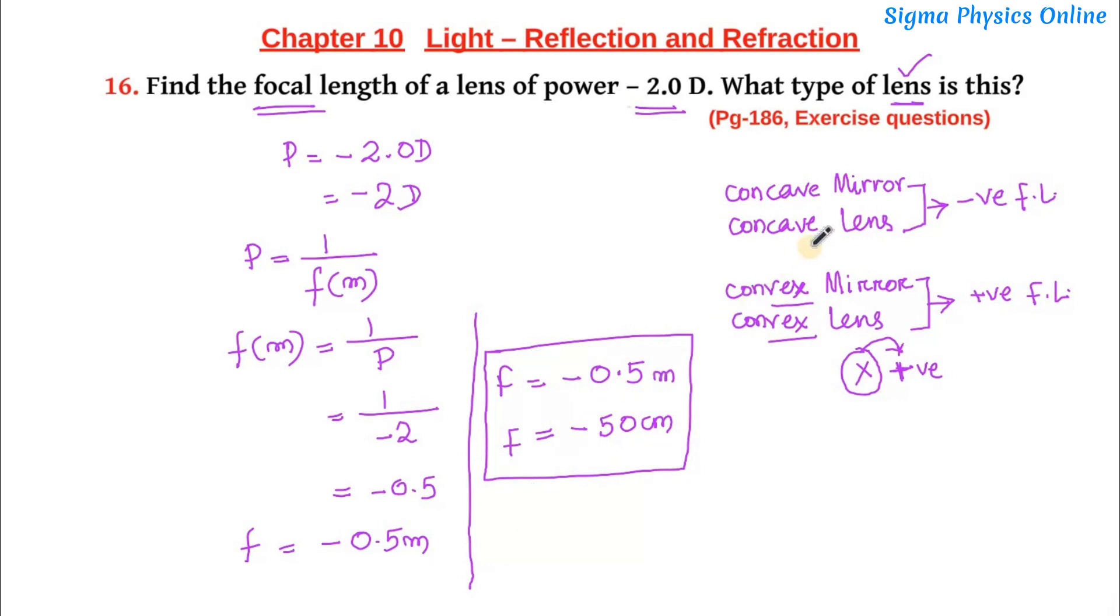Since we got the focal length in negative, now negative focal length means what type of lens is it? It's a concave lens. So we write since the focal length of this lens is negative it's a concave lens. So this is the answer to this question.